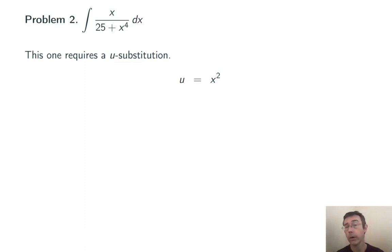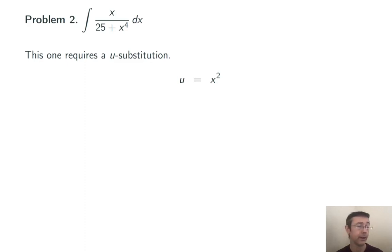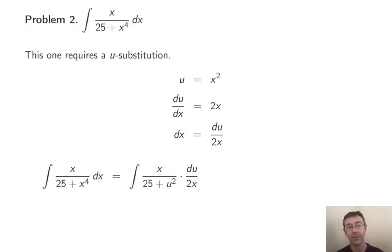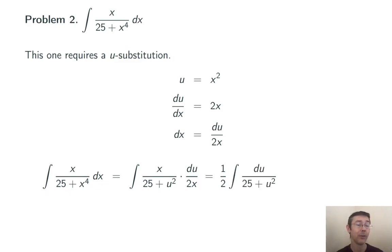With u equals x squared, the denominator becomes 25 plus u squared. And as we'll see, the x in the numerator is going to cancel. I differentiate, treat du/dx like a fraction and solve for dx, then substitute back into my integral. I get the integral of x over 25 plus u squared times du over 2x. Simplifying, I get one half times the integral of du over 25 plus u squared.